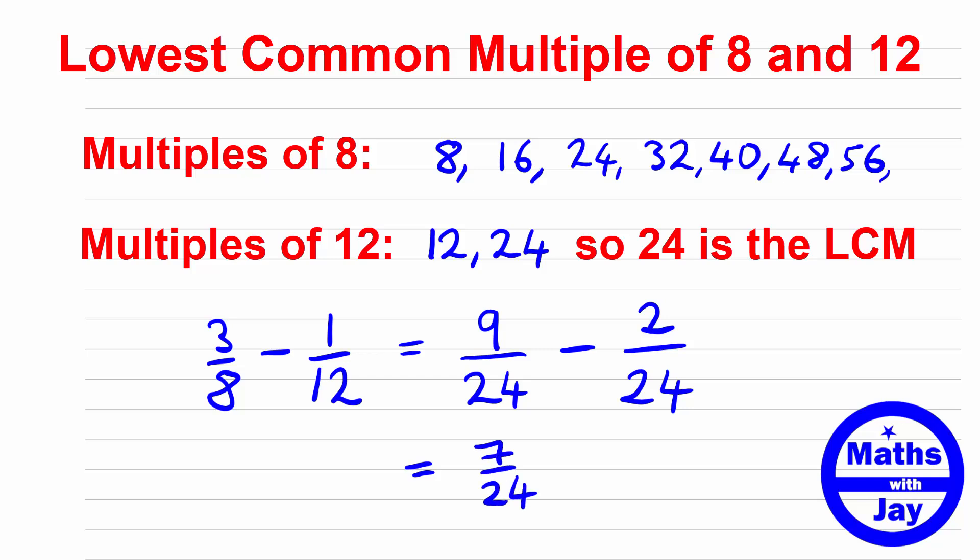So if we hadn't used the lowest common multiple what we might have done is said well we could multiply the 8 and 12 together, what would that give us? That would be 96 so we would have ended up with 36 over 96 and 8 over 96. That would have given us 28 over 96 which when we cancel down, dividing numerator and denominator by 4, would give us the same answer as 7 over 24. But you can see it's much simpler to use the lowest common multiple when you're working with fractions while adding or subtracting fractions.